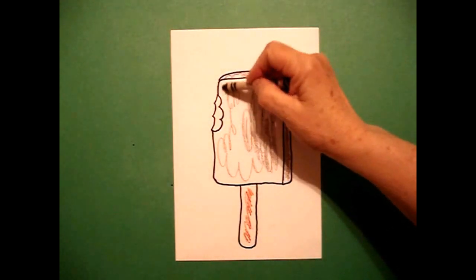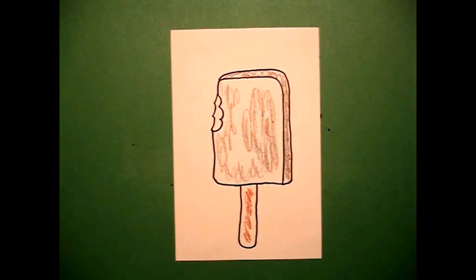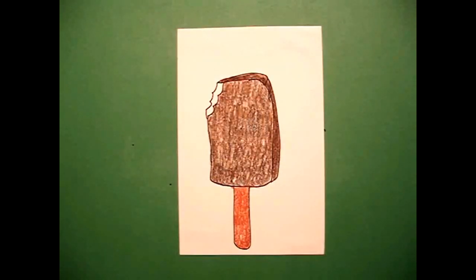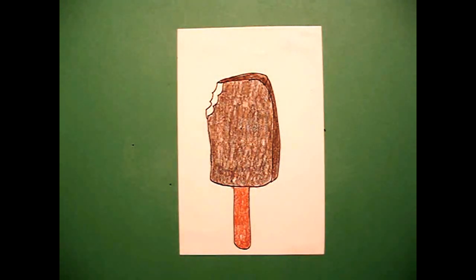All the way on the top, down and around. Okay, let's see what it looks like all colored in. Here's my ice cream bar all colored in, ready to be eaten. Yum! Okay, bye-bye!